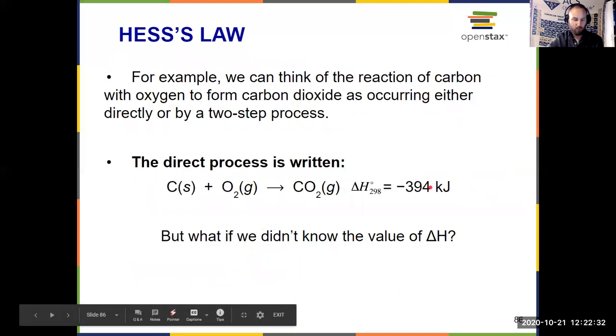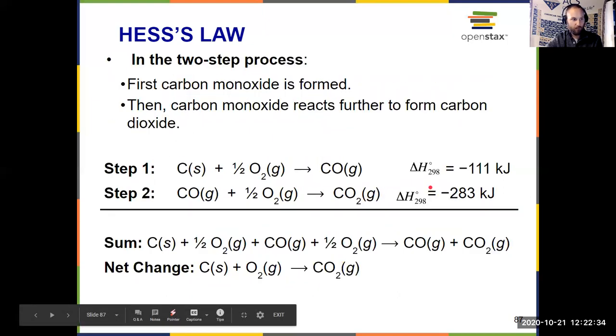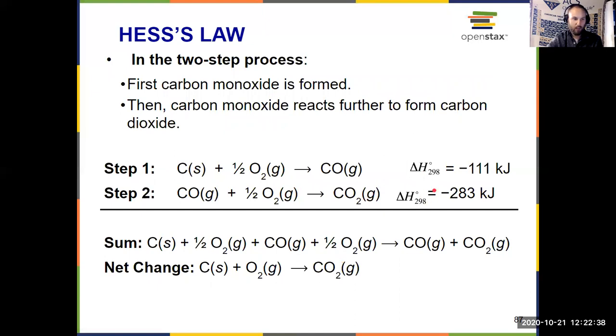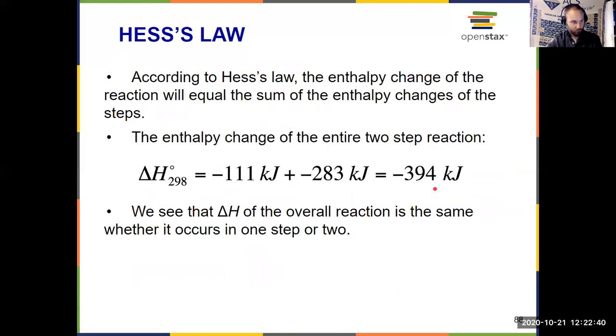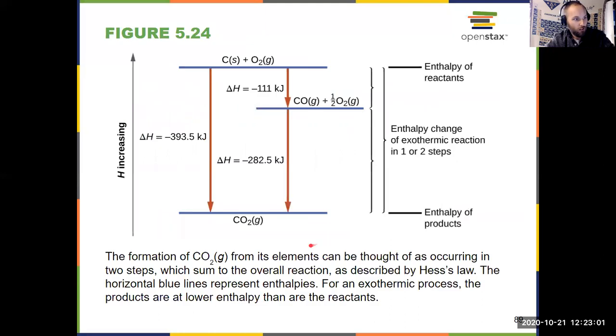C plus O2, and sure enough, if you take those two individual parts right there and add them together, the sum is negative 394 kilojoules, which shows us that Hess's law works. The enthalpy change of an overall reaction is equal to the sum of the steps. You just have to add them together. It doesn't matter if it happens in one step or two steps or 10 steps.